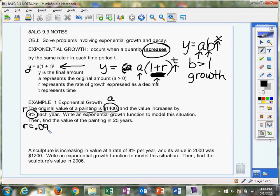We're going to write an exponential growth function - that's the first thing we need to do. Then we're going to find the value of the painting in 25 years. So the first thing we need to do is take our function y equals a times 1 plus r raised to the t, and we're going to write a function filling in for a and filling in for r.